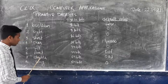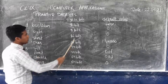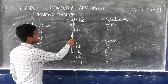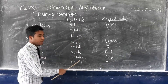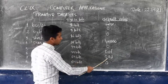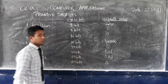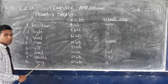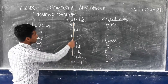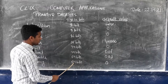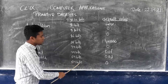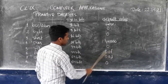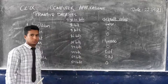Double is another data type and its size in bits is 64 bits, and the default value is 0.0d. The last one is long — long also has a size of 64 bits and its default value is 0.